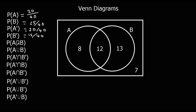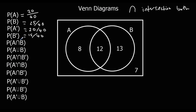Probability of A ∩ B — this intersection symbol means the intersection of A and B, so it's people that like both of these things: apples and bananas. Where is it both apples and bananas? That's the middle bit. For this intersection, it's got to be both of them. So the intersection of A and B is 12 people.